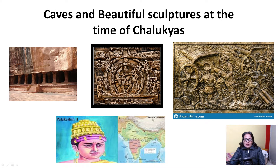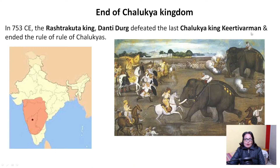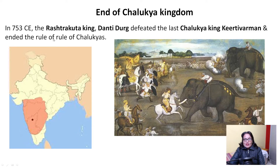Now about the end of the Chalukya kingdom. In 753 CE, the Rashtrakuta king Dantidurga defeated the last Chalukya king Kirti Varman, and this is how the Chalukya empire came to an end.